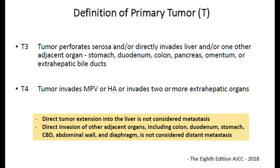T3: tumor perforates the serosa and/or directly invades the liver or one other adjacent organ. T4: tumor invades the main portal vein, hepatic artery, or invades two or more extrahepatic organs. If one organ is involved, it is T3; if main portal vein or hepatic artery or two or more organs are involved, it is T4. Direct tumor extension to the liver is not considered metastatic — direct invasion of adjacent organs like colon, duodenum, stomach, common bile duct, abdominal wall, or diaphragm is still a locally advanced resectable disease, not metastatic disease.